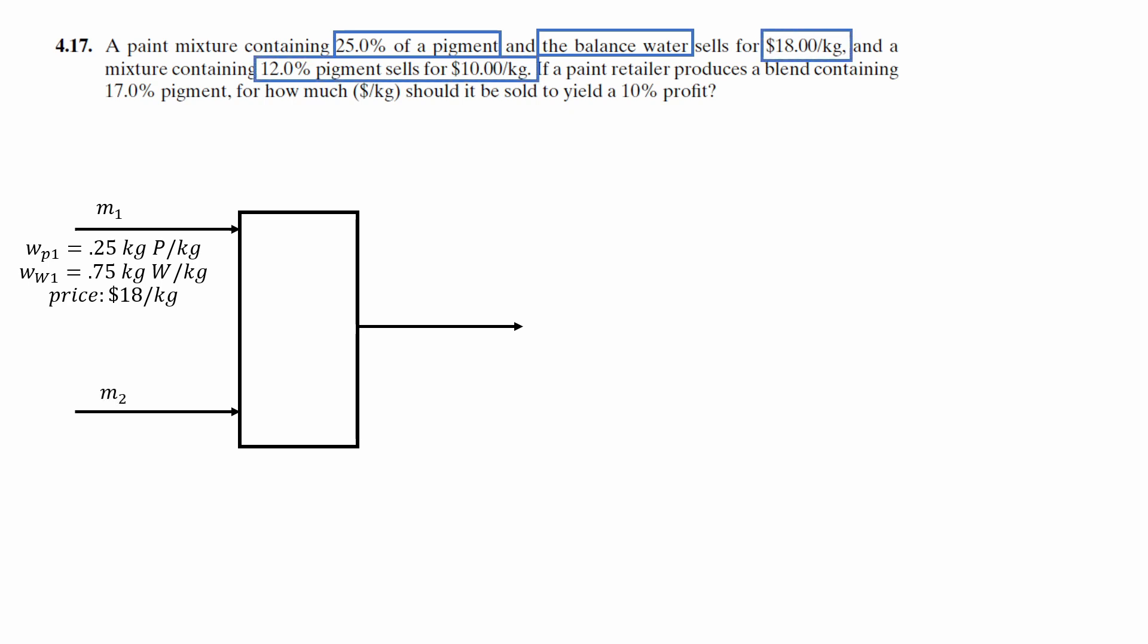Similarly, for our second stream, we can write out 12% of the pigment as the mass fraction in the second stream, and the balance is water, 1 minus 0.12, which is 0.88, and the price is at $10 per kilogram.